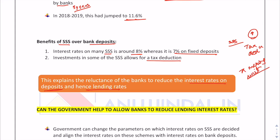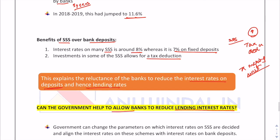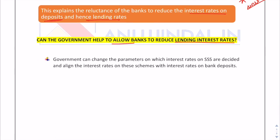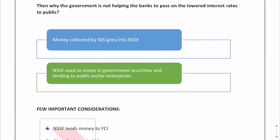Can the government help allow banks to reduce lending interest rates? Definitely yes, because the government has the power to change the parameters on which interest rates on small savings schemes are decided, aligning them with bank deposit rates. But the question arises: why is the government not helping? The answer is that money collected by small savings schemes goes into the National Small Savings Fund (NSSF), and this fund's money is further invested in government securities and lent to public sector enterprises.